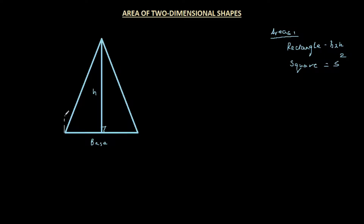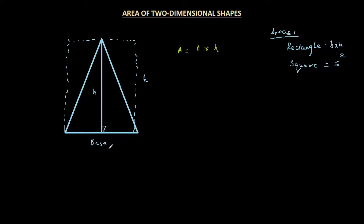What if we convert this triangle into a rectangle? Let me draw a dotted rectangle around it to make the rectangle complete. The rectangle also has a height which is H, and its area would be base times height. But we want the area of the triangle, not the rectangle. Let's name the sides of the triangle: call the vertices A, B, C, the foot of the perpendicular D, and the other two rectangle corners F and G.